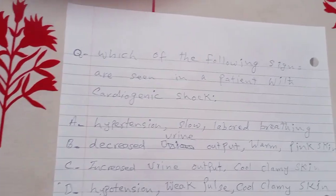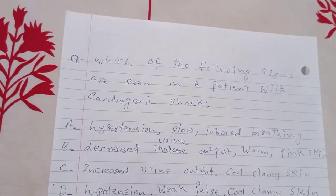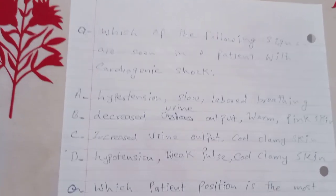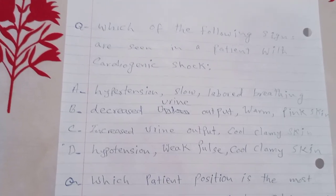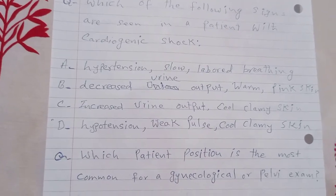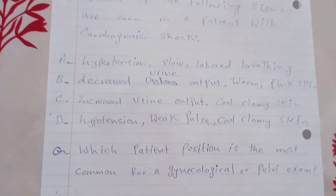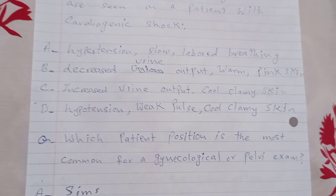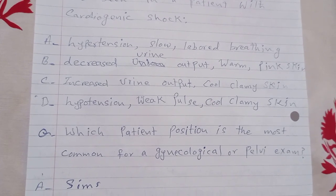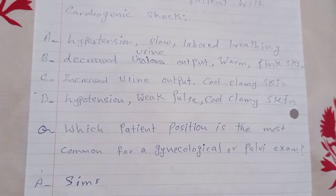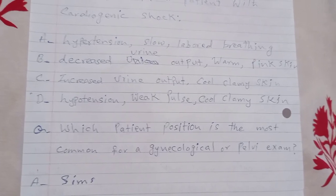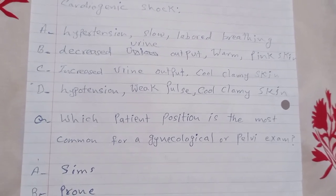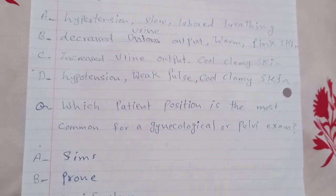Which of the following signs are seen in a patient with cardiogenic shock? A. Slow labored breathing. B. Decreased urine output, warm skin. C. Increased urine output, cold clammy skin. D. Hypotension, weak pulse, and cold clammy skin. The answer is D.